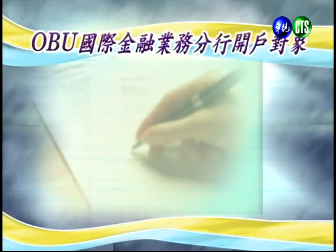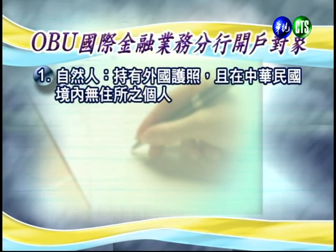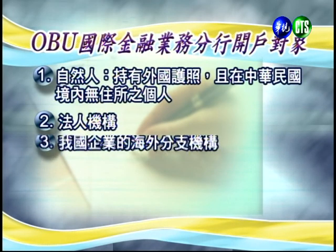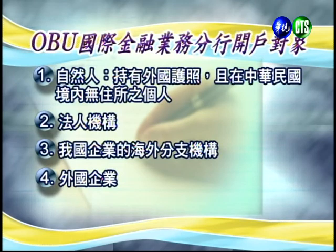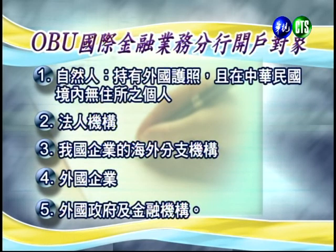OBU國際金融業務分行的開戶對象包括：第一，自然人，持有外國護照且在中華民國境內沒有固定住所；第二，法人機構；第三，我國企業的海外分支機構，如Acer在海外的美國分公司；第四，外國企業，如Intel、Sony等；第五，外國政府及金融機構。只要公司設立地不在台灣領土以內，即可允許開戶，不追究背後身份背景。